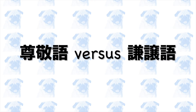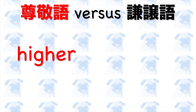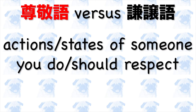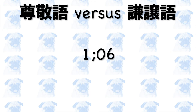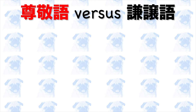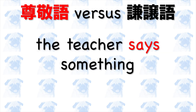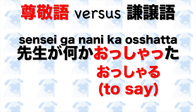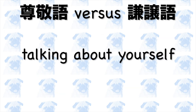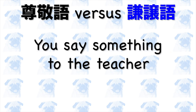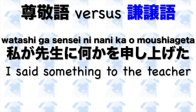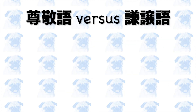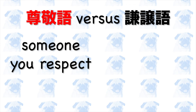Next, we are going to contrast sonkeigo and kenjougo. To put it simply, sonkeigo implies a higher social status, whereas kenjougo implies a lower social status. Sonkeigo is usually used when referring to the actions or states of someone you respect. For example, when talking to your teacher, if she says something, this action should be described as 先生が何かおっしゃった — 'the teacher said something' — where おっしゃる is the sonkeigo form of 'to say'. If, on the other hand, you want to talk about your own action, such as when you said something to your teacher, you should use kenjougo: 私が先生に何かを申し上げた — 'I said something to the teacher' — where 申し上げる is the kenjougo form of 'to say'. Basically, the difference comes down to whether you are talking about someone you respect or yourself, respectively.